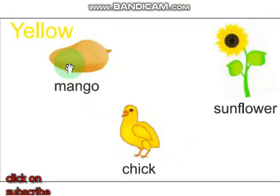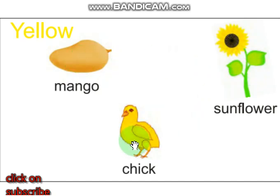Yellow color — which things are yellow? Mango is yellow. Sunflower and chick are yellow. Mango, sunflower, and chick — yellow.